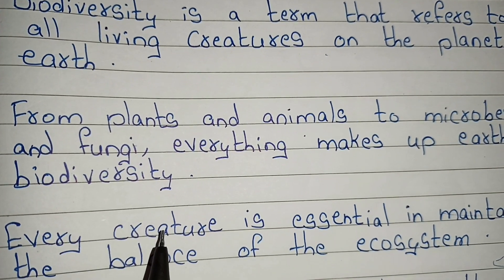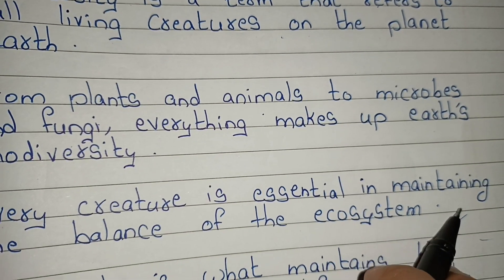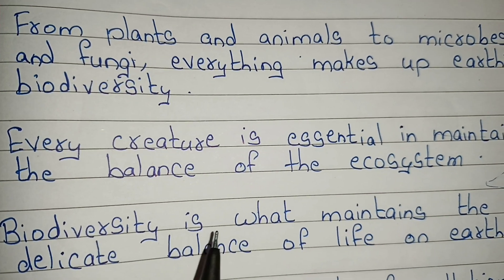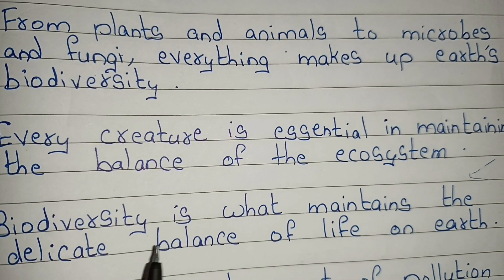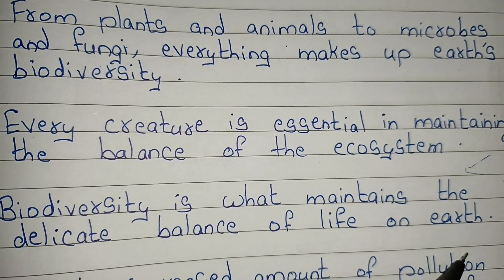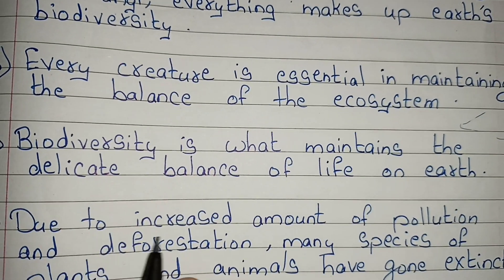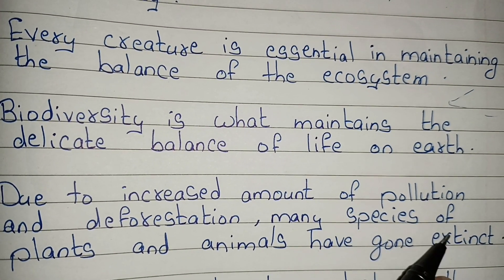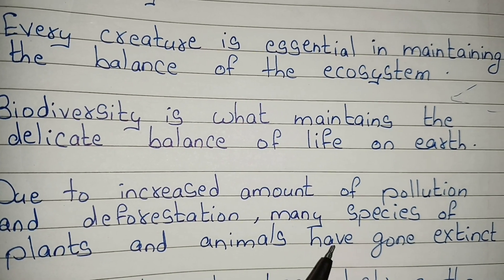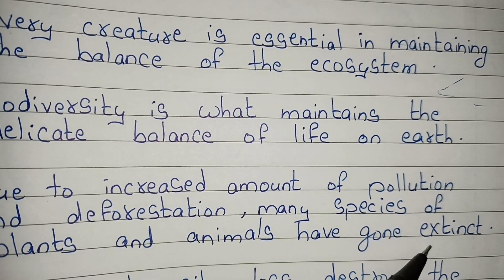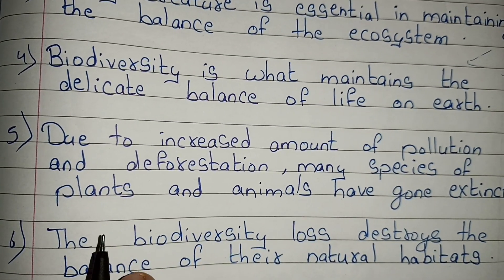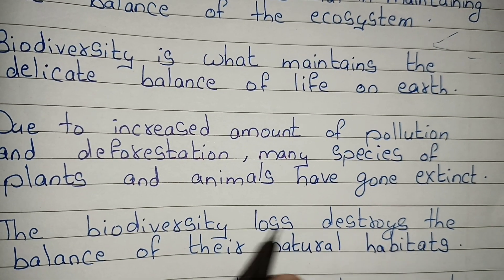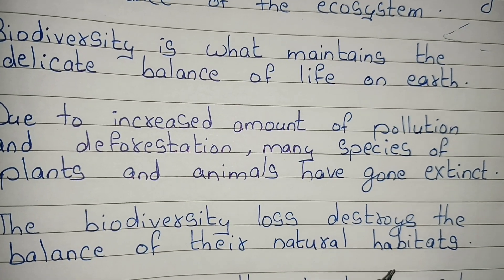Every creature is essential in maintaining the balance of the ecosystem. Biodiversity is what maintains the delicate balance of life on earth. Due to increased amounts of pollution and deforestation, many species of plants and animals have gone extinct. The biodiversity loss destroys the balance of their natural habitats.